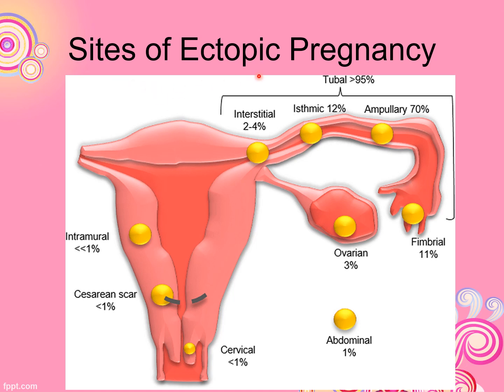This is the science of ectopic pregnancy. As already mentioned, the fallopian tube is the most common site. This is the fimbriated end. A question: where does fertilization take place? Tell us in the comments. Here you can see the fimbria in front of the uterus, and the uterus is the site of normal implantation.